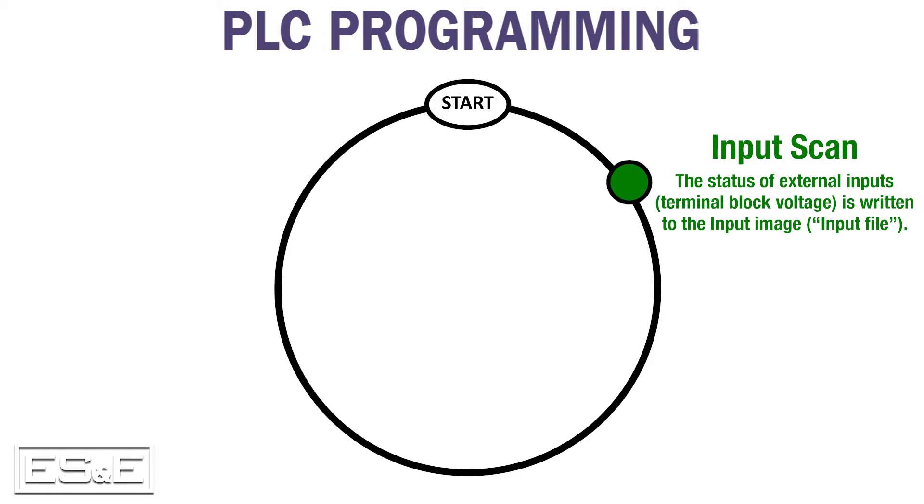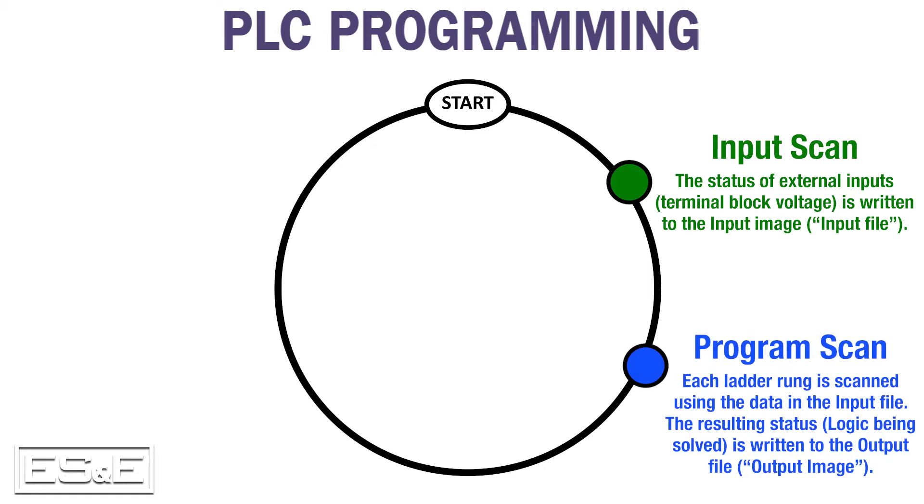During the program scan, the PLC uses the stored value of devices to solve the logic in each rung. If the logic solves true, the PLC updates the output image with a 1. If it solves false, the output image becomes a 0.